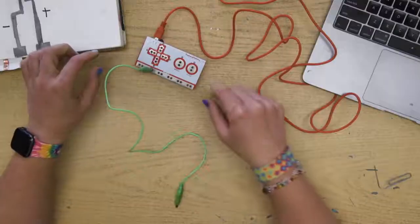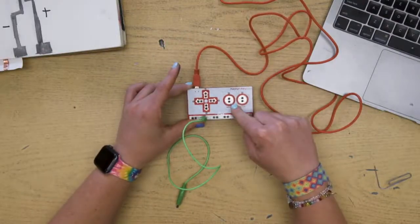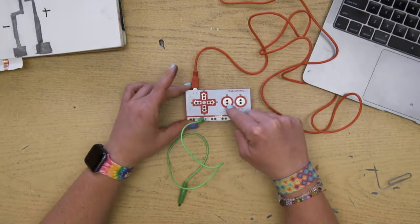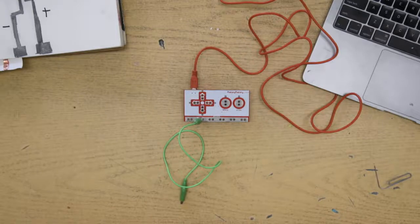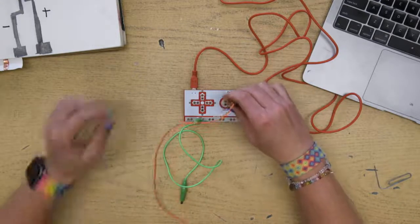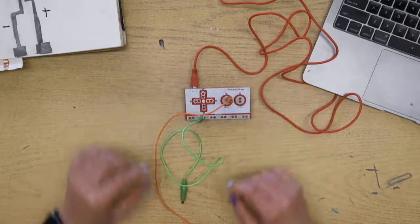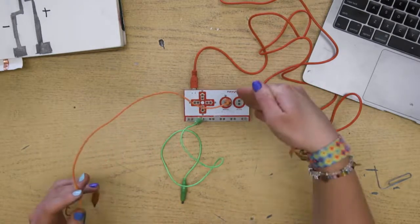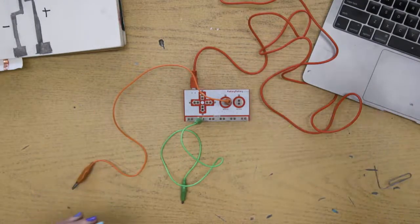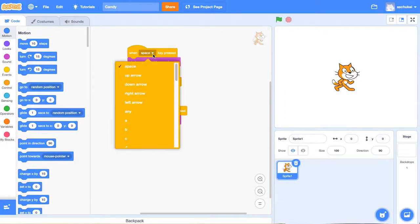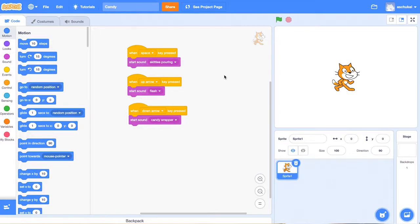So now, on this Makey Makey device, you will see that there is a component that says space. So that is the space bar, if you will. I'm going to take one of these clamps, and I'm going to put this here. So then anything that I have connected to this is going to trigger whatever command I have in place for the space bar. Now, looking at here, you could change these to anything. Up arrow, down arrow, right arrow, any letter on the keyboard. These can get really advanced and intricate for your students.